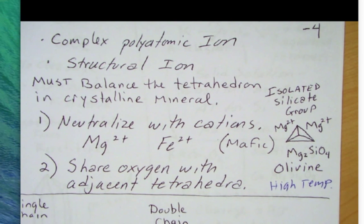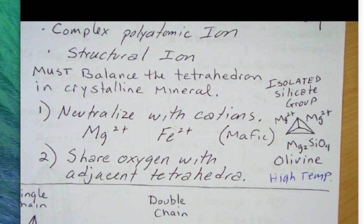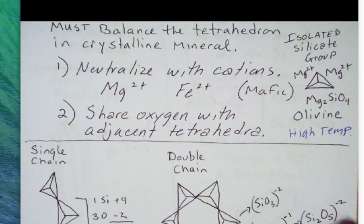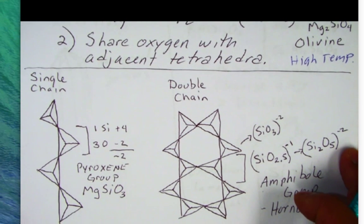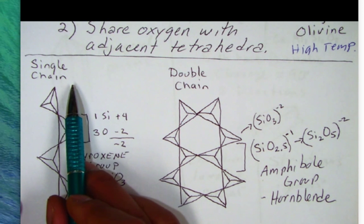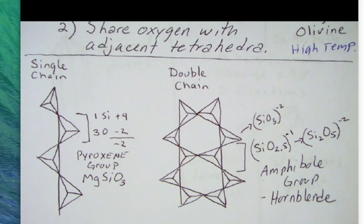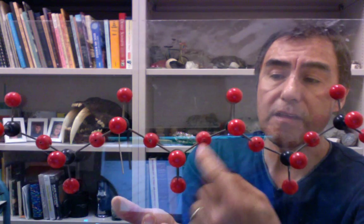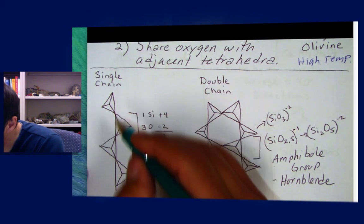At some point we're going to start cooling our magma and running out of magnesium and iron positive ions. So what we'll have to do is start sharing oxygen with adjacent tetrahedra. A group called the single chain silicate group — here I have the tetrahedra all lined up in a single chain. Back here I have a model showing that tetrahedra group, where you see every tetrahedron will be sharing two oxygen. Each one of these is sharing two oxygen.